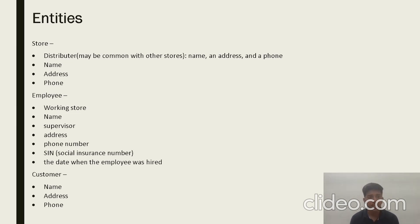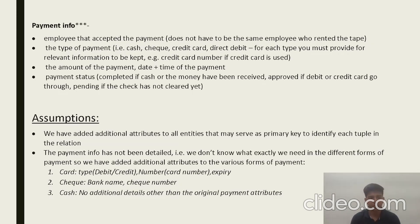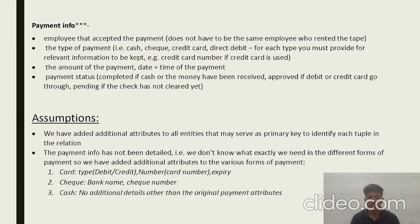We have broken down the question into simple entities and their attributes: the store, the employee, the customer, the tape, the movie, the renting, and the payment information. We have also made certain assumptions, such as adding additional ID attributes to all entities to serve as primary keys. For card payments, we added type (debit or credit), card number, and expiry date. For check, we added bank name and check number. For cash, no additional details beyond the original payment attributes are needed.